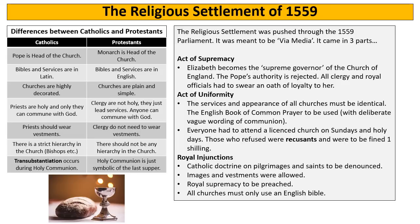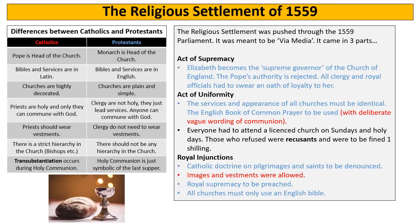Pause the video and jot down areas of the religious settlement which would be pleasing to Protestants, areas that would be pleasing to Catholics, and areas which would please neither. On the board you'll see the differences — Catholic ideas in red and Protestant ideas in blue. Elizabeth being head of the church is a Protestant idea; English prayer books are a Protestant idea.